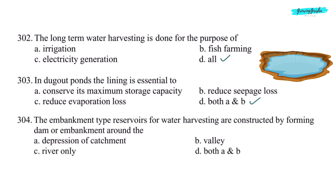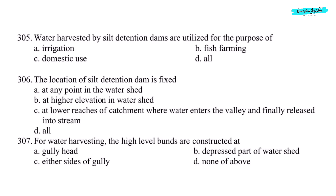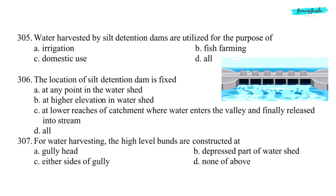Next question: embankment-type reservoirs for water harvesting are constructed by forming dams or embankments around — option D, both A and B. Next question: water harvested by silt detention dams is utilized for the purpose of — option A, irrigation.